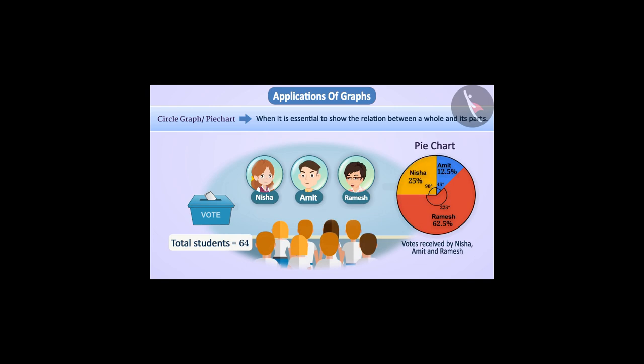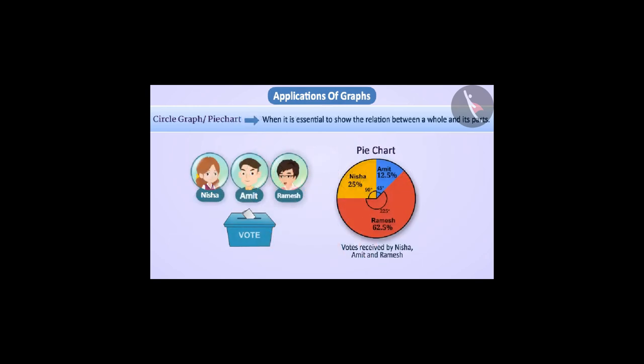From the pie chart, you can find out how the entire vote has been divided into different candidates. In a pie chart, the entire circle is divided into sectors in which the size of each sector is proportional to the information it represents.